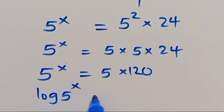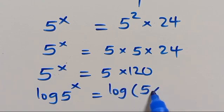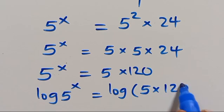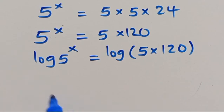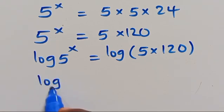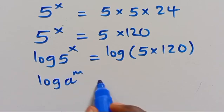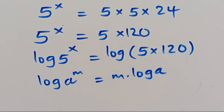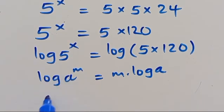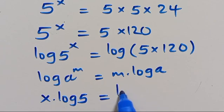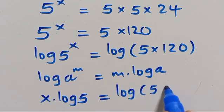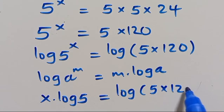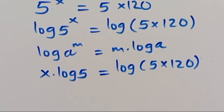We have log of 5 to the power of X equals log open parenthesis 5 times 120 in parenthesis. When we have log of a to the power of M, the power comes down to be M multiplied by log of the base. Then here we have X times log 5 equals log of 5 times 120.